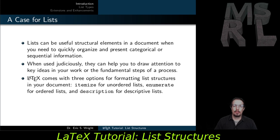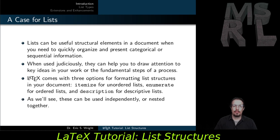LaTeX comes with three options for formatting list structures in your document. Itemize is for unordered lists, enumerate is for ordered lists, and description is for descriptive lists. As we'll see, these can be used independently or nested together.